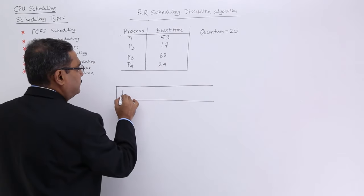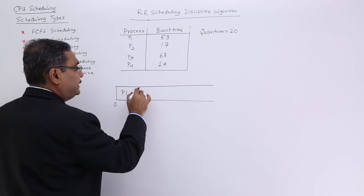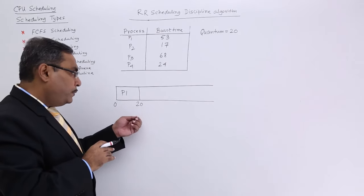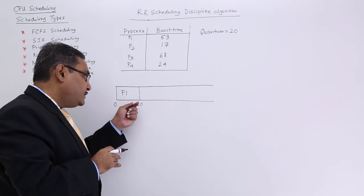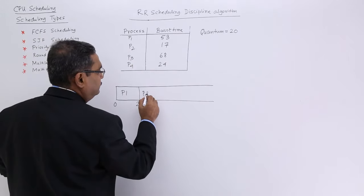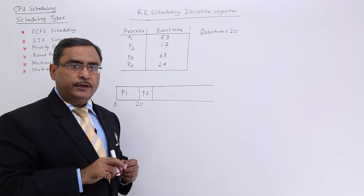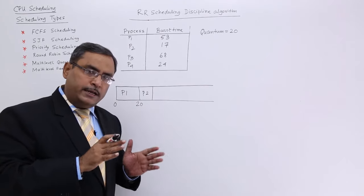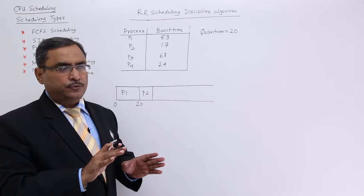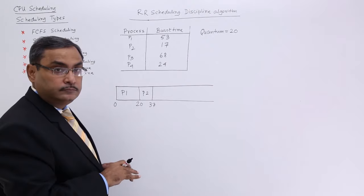So now let me draw the Gantt chart for this particular problem. So I shall take the P1 at first. So here it will start at 0 and the quantum is 20. So at 20 instant of time, P1 will not get completed, P1 is having 53. So at that instant of time, CPU will be taken away from it. Now it will be given to P2. Now the thing is that P2 is having a duration of 17 and quantum is 20. So CPU will be allocated to P2 for 17 units of burst time. So there should not be any idle time for the CPU. So P2 will be executed for 17 units of time.